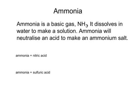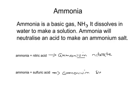Ammonia is a bit of an exception. It's a gas at room temperature, but it dissolves in water to make a solution which is a base. It will react with an acid to make a salt — but this is the exception: it doesn't make a salt plus water. So ammonia will react with nitric acid and make ammonium nitrate. Notice how the name changes — we don't have ammonia nitrate, we've got ammonium nitrate, similar to a metal like sodium or potassium. And ammonia with sulfuric acid would make ammonium sulfate.